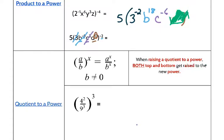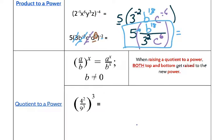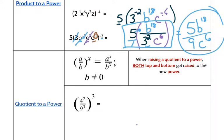Now let's get rid of our negatives. This 5 doesn't change — I'm going to multiply that 5 in. My 3 has a negative exponent so it goes to the bottom; lose the negative, keep the exponent. B to the 18 stays up top — no negative exponent. C has a negative so c goes to the bottom, keeping the 6. So the more correct final answer is 5b to the 18 over 3 squared times c to the 6th, which is 5b to the 18 over 9c to the 6th.